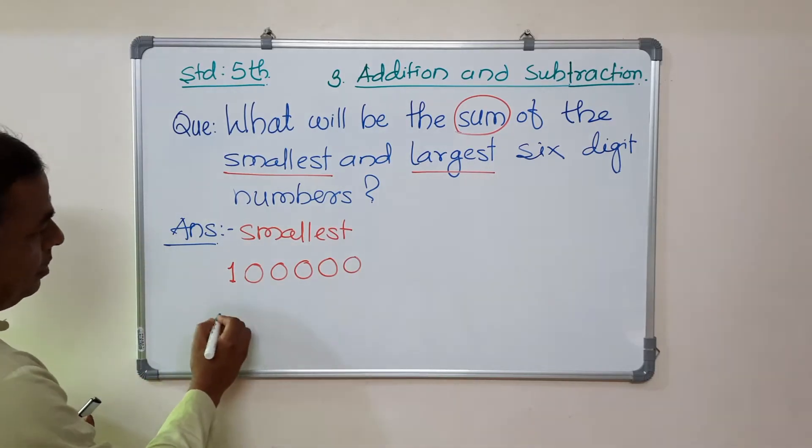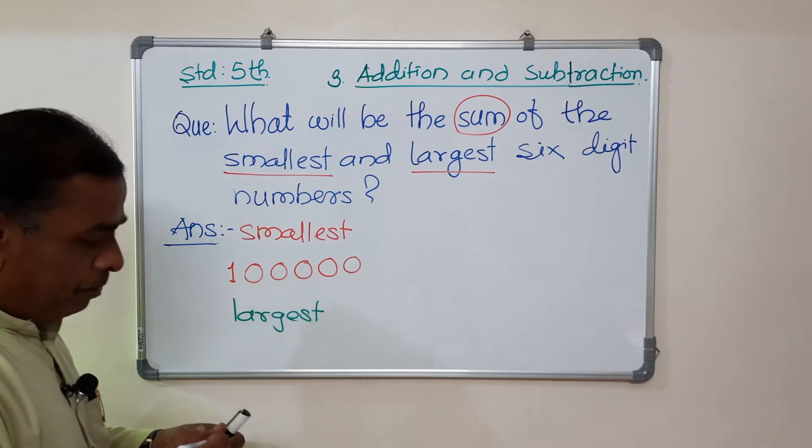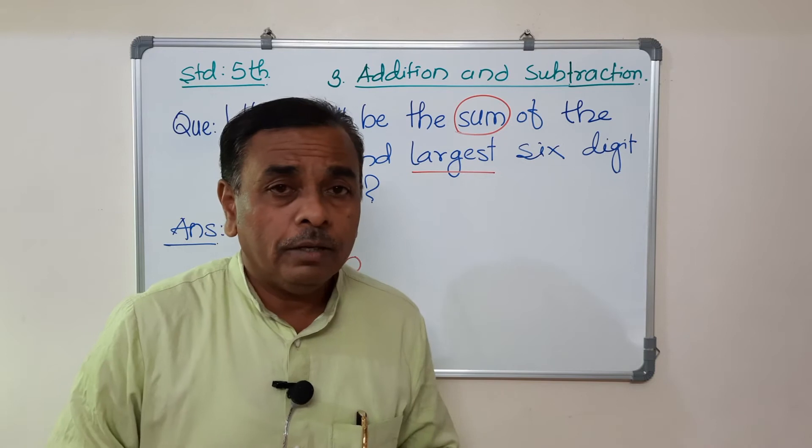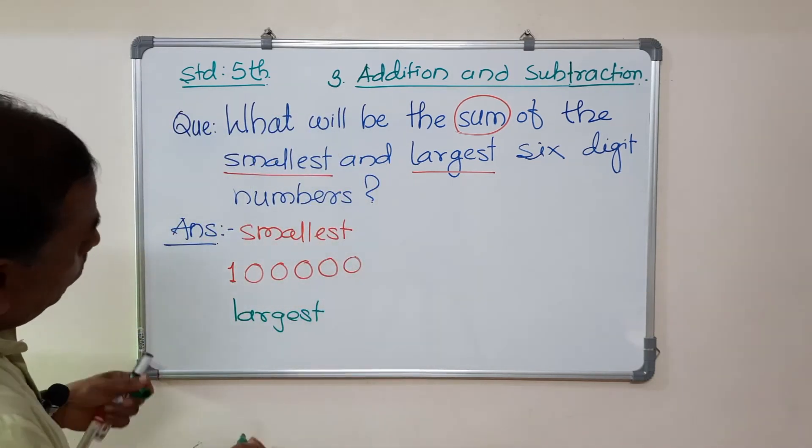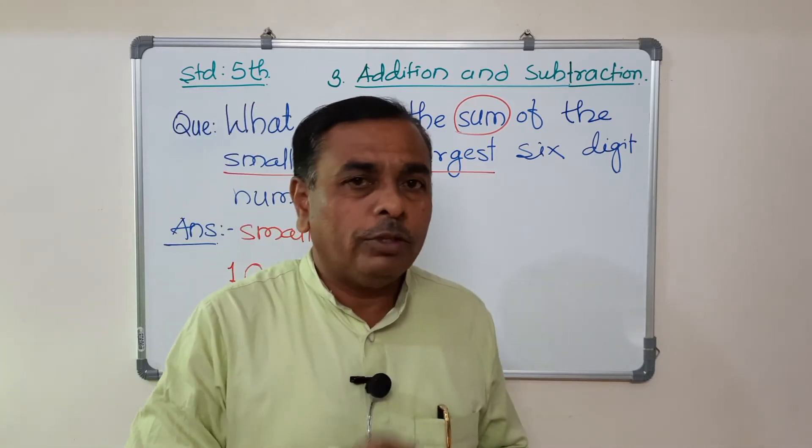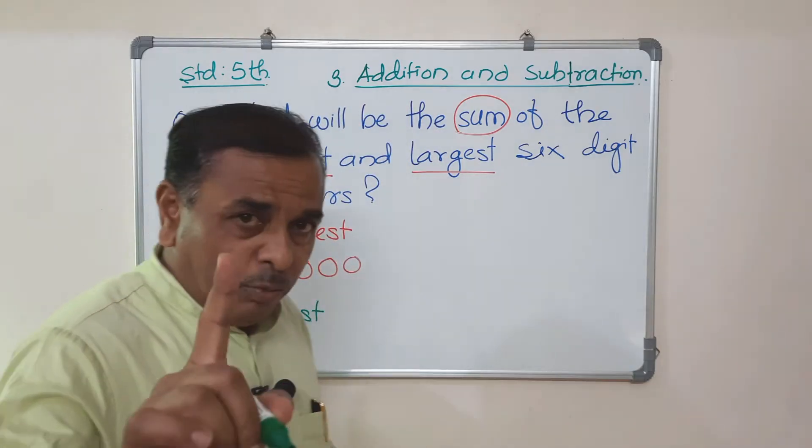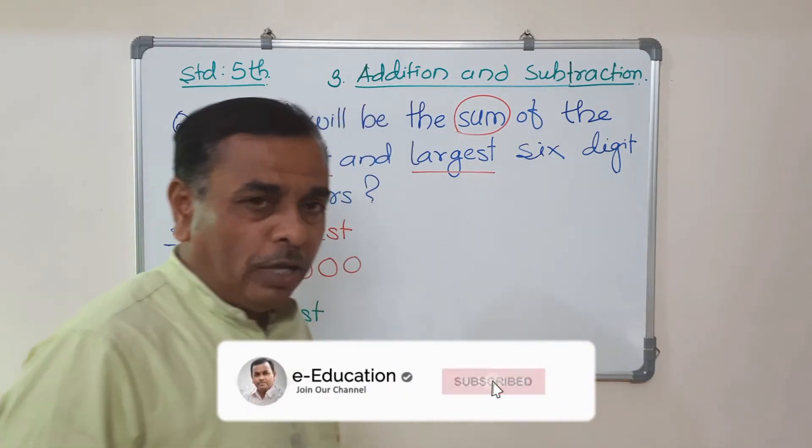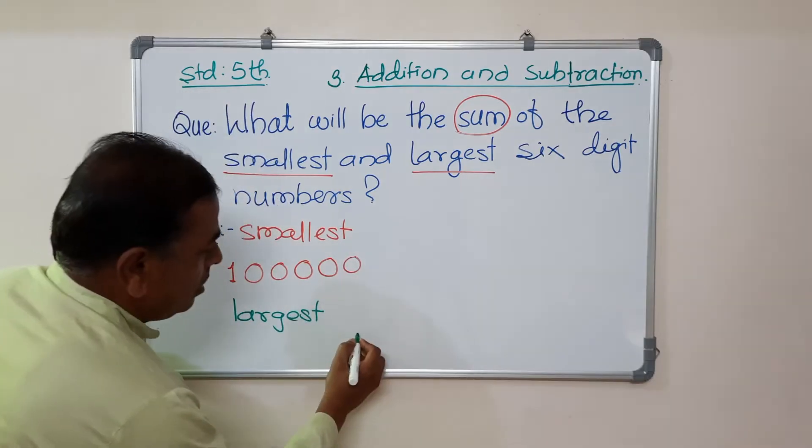Largest. What is the largest one digit number? Zero to nine? Yes, very good. It's very simple. Nine.